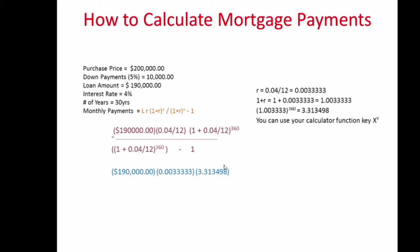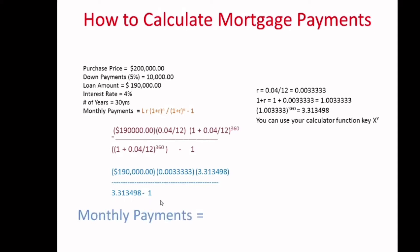Plug in those separate numbers: $190,000 times the interest rate, times (1 + 0.04/12) to the power of 360, then divide by 3.313498 minus 1. When you plug in all that calculation, the monthly mortgage payment comes out to $907.09. This includes interest and principal, but does not include real estate taxes, insurance, or PMI.